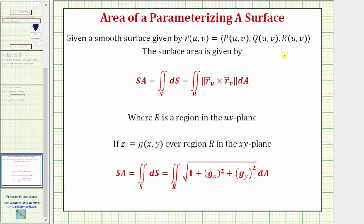In our previous example, we found the surface area of a parametric surface given by r of u comma v. But in this example, we're trying to find the surface area of the surface given by z equals g of x comma y over the region r in the xy plane. So the surface area equals the double integral over the surface s, which equals the double integral over the region r of the square root of one plus the partial derivative of g with respect to x squared plus the partial derivative of g with respect to y squared, differential a.